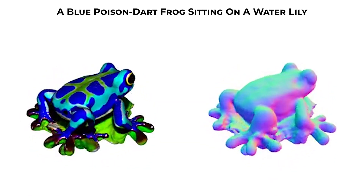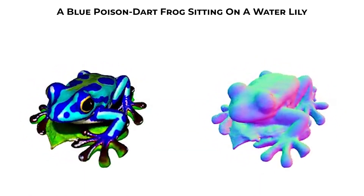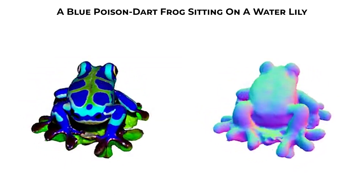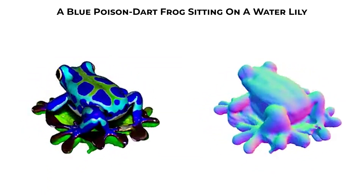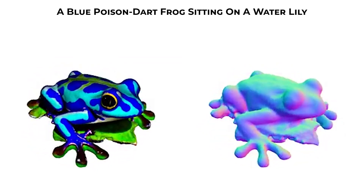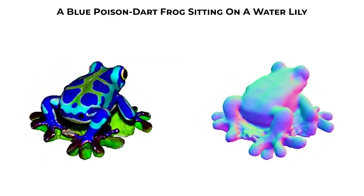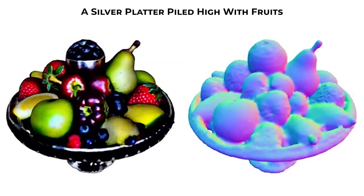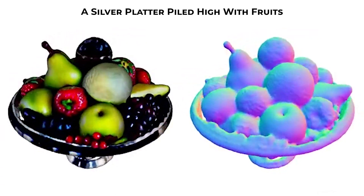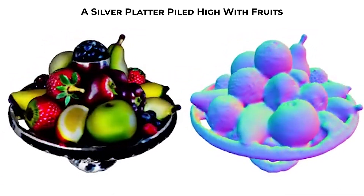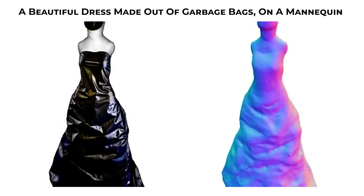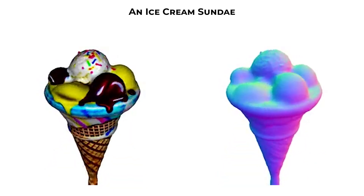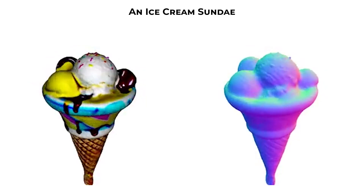Let's look at a few examples. First up, we have a beautiful blue poison dart frog sitting on a water lily. The AI did an amazing job generating this model — just look at the detail in the texture and geometry of the mesh. Next, we have a silver platter piled high with fruits, and the detail here is also incredible. Creating 3D models takes professionals days or weeks, but now everyone can create them in less than 40 minutes.